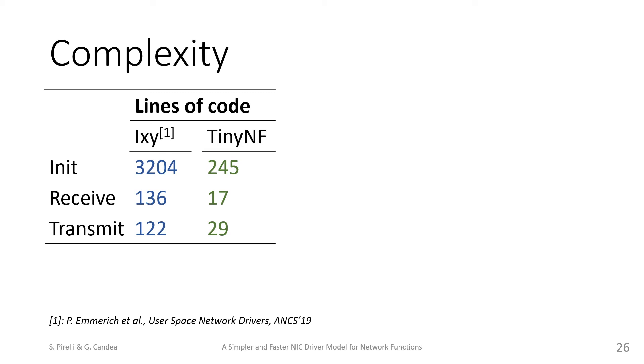We see that the amount of initialization code is roughly the same, which shows that initialization in DPDK could be simpler, but that ICSI still has over twice the amount of code to receive and transmit packets, mainly because of the use of a buffer pool, which our model does not need.